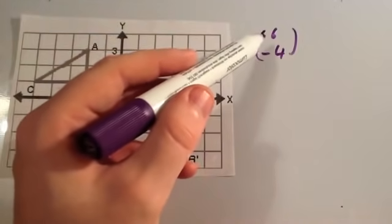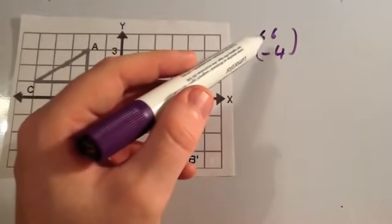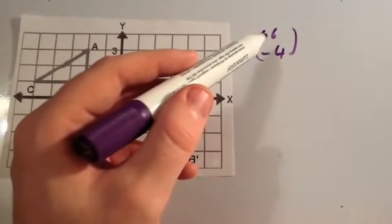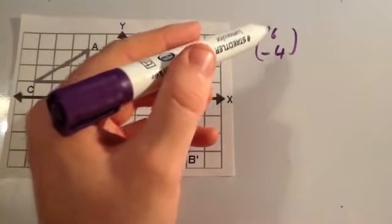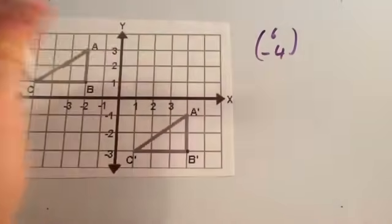The top number tells you how many squares to the right or to the left you're moving it. If it's positive, it's telling you how many squares to move it to the right. If this number on the top is negative, it's telling you how many squares to the left to move it.